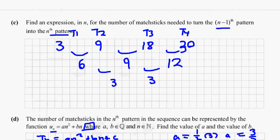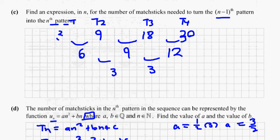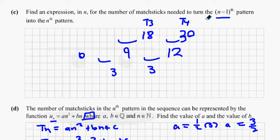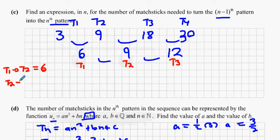The next thing we're asked to do is find the expression for the number of matchsticks needed to turn the (n−1)th pattern into the nth pattern. There are two ways to look at this. To turn t1 into t2 we needed six matchsticks, to turn t2 into t3 we needed nine, and to turn t3 into t4 we needed twelve.